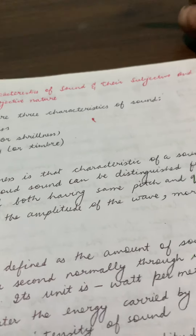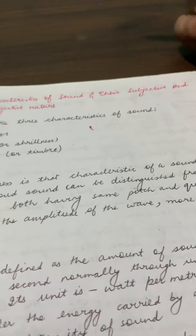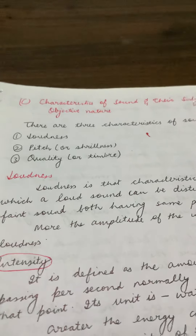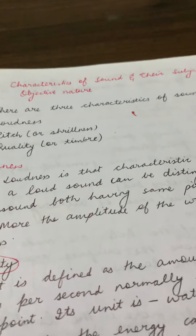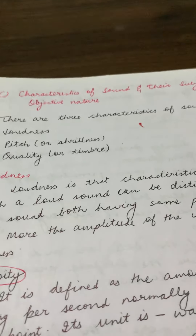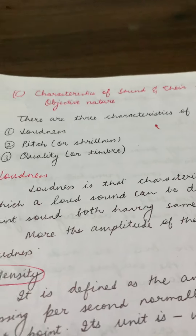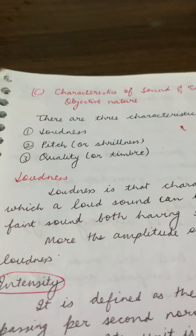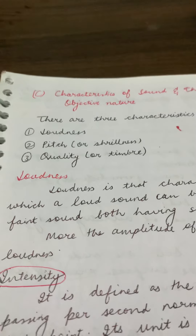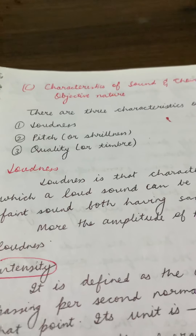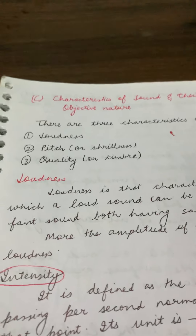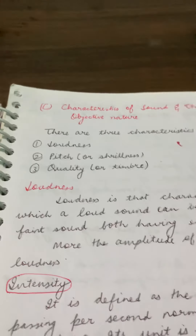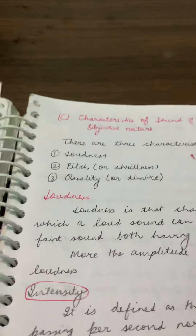Let's examine the characteristics of sound and their subjective and objective nature. Remember there are three characteristics of sound, which you've studied since eighth standard: the first is loudness, the second is pitch or shrillness, and the third is quality or timbre. Loudness is that characteristic of a sound by which a loud sound can be distinguished from a faint sound.